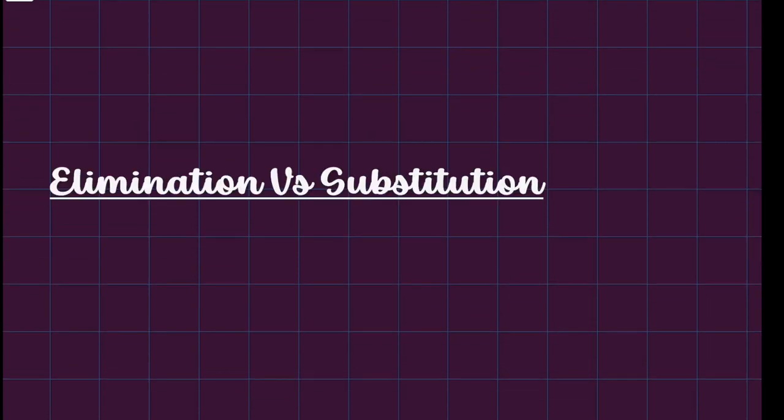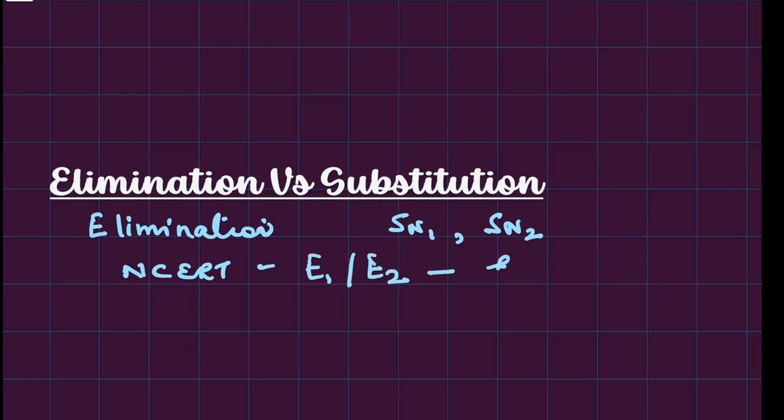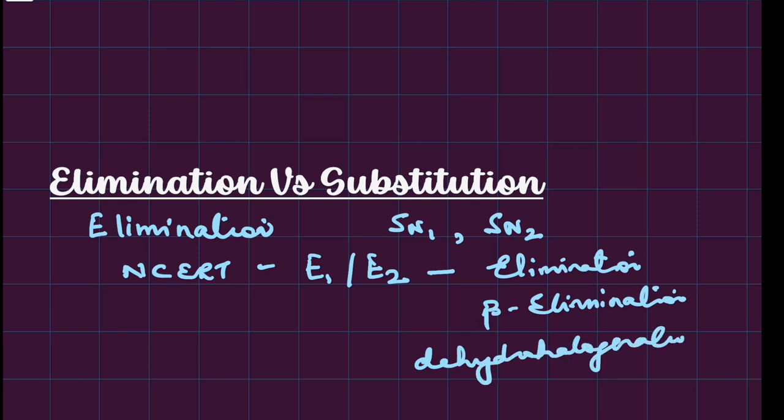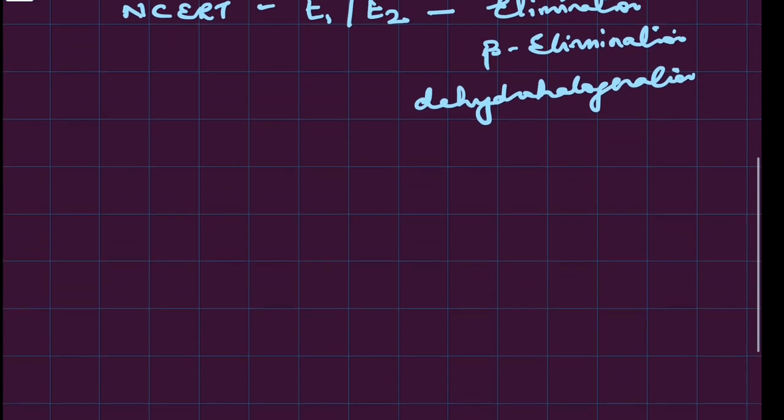Elimination versus substitution. Before we start with this, I hope you have gone through SN1, SN2, and have a fair idea of elimination reactions. Although NCERT doesn't talk about E1 and E2, they only talk about elimination and call it beta elimination or dehydrohalogenation. But if you have a fair idea of E1 and E2, this video will be more meaningful.